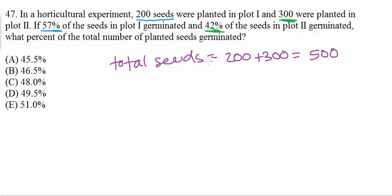So now we have to figure out how many germinated. So from plot 1 let's figure out how many germinated. So we had 200 seeds and 57% germinated. So we are going to go ahead and multiply 200 by 0.57.